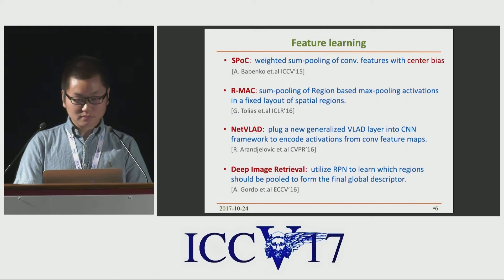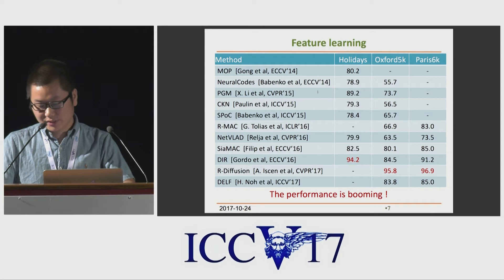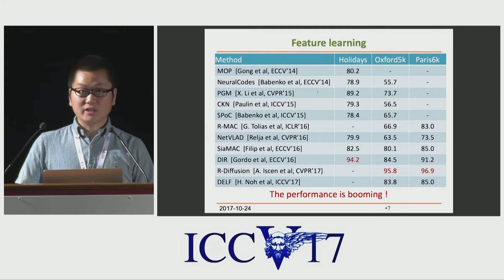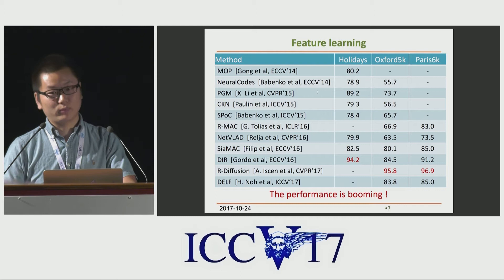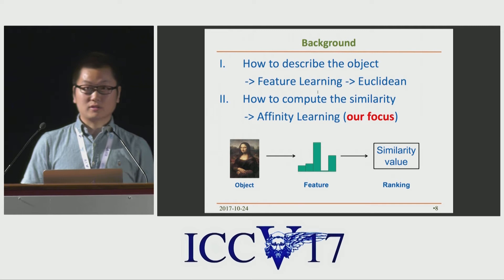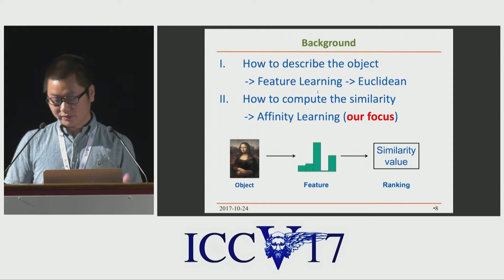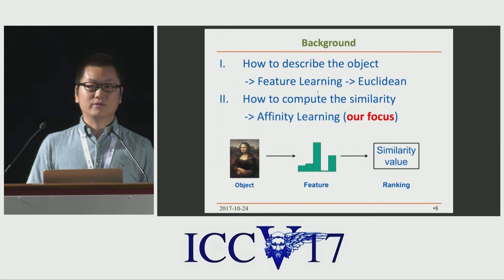In this slide, we show the recent progress in retrieval performance. As we can see, the accuracy is booming — it's a very amazing result that the mAP on the Oxford 5K dataset is 95.8. After generating the features, most previous works conduct retrieval by simply comparing features in the Euclidean space. In this work, we will show how to compute a more feasible similarity through affinity learning.